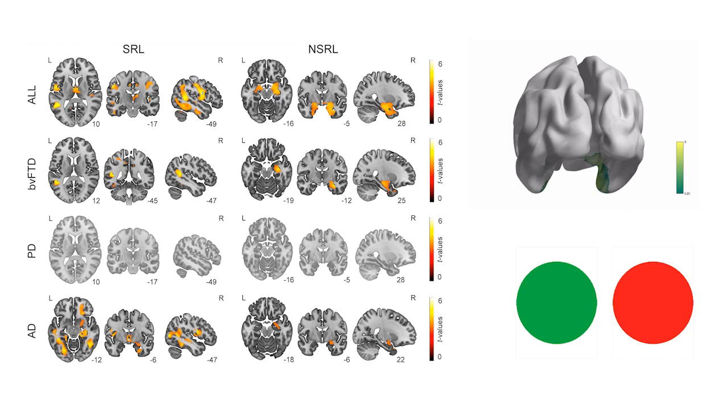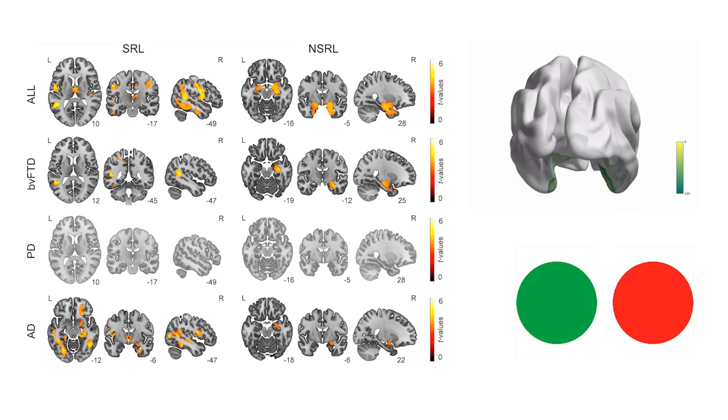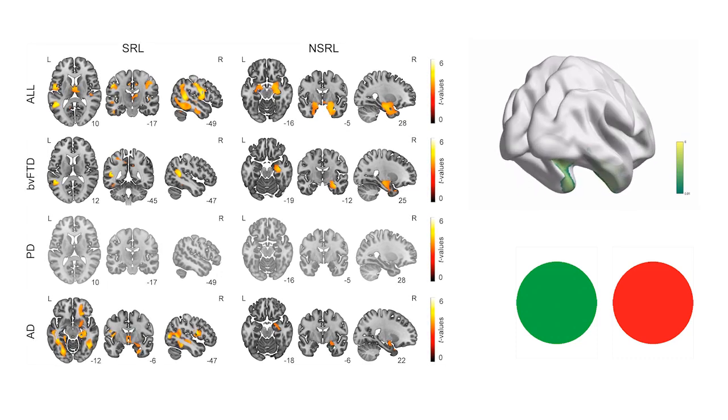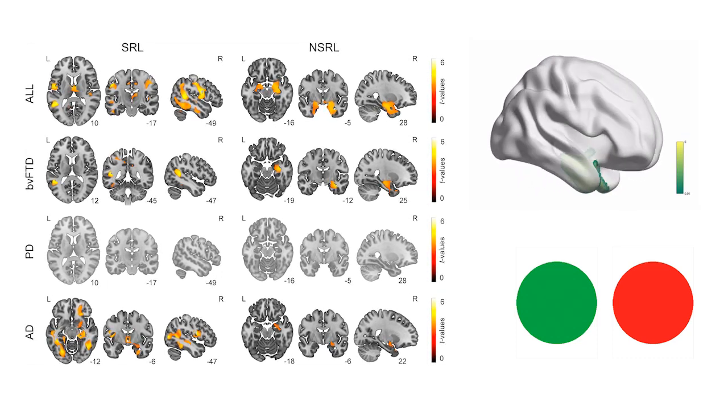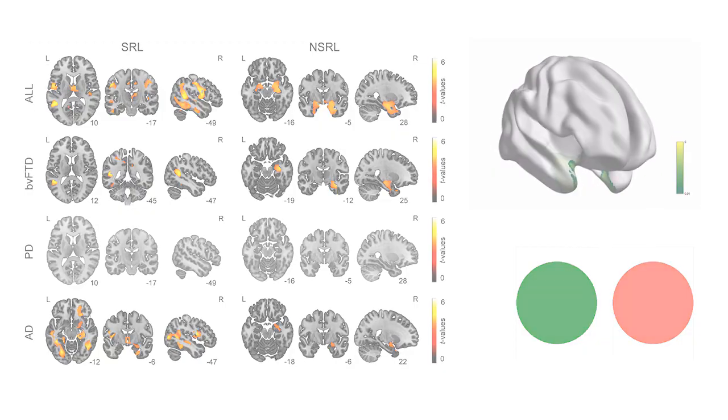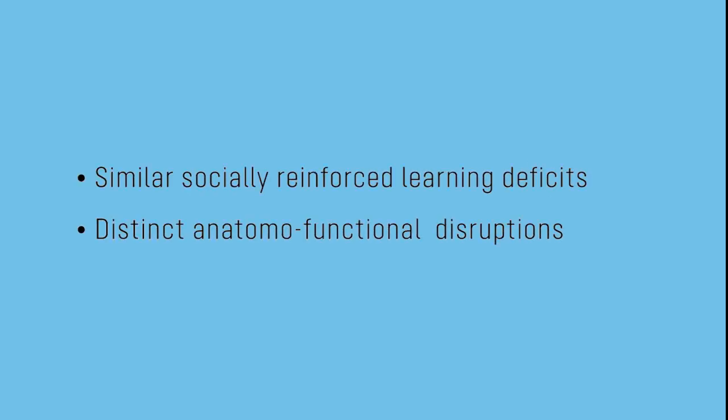In contrast, non-socially reinforced learning was consistently linked to medial temporal regions. Our novel multimodal evidence suggests that similar socially reinforced learning deficits may be rooted in distinct anatomofunctional disruptions across different neurodegenerative diseases.